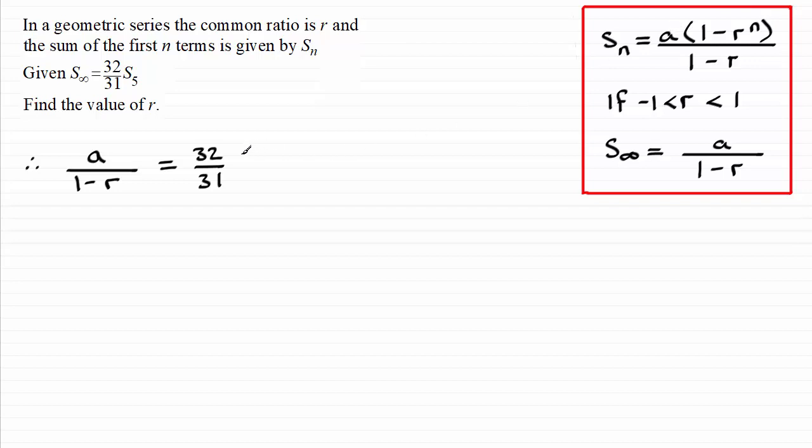And so we've got a, a being the first term, multiplied by one minus r to the power of five, and that's going to be all divided by one minus r.